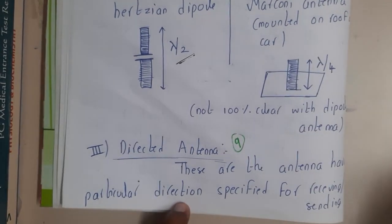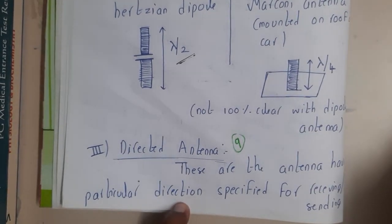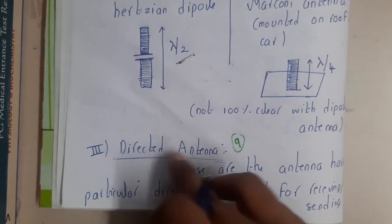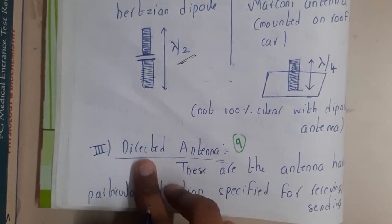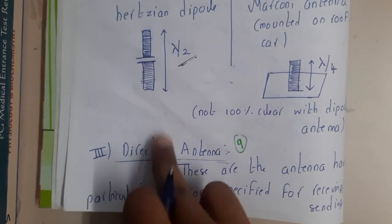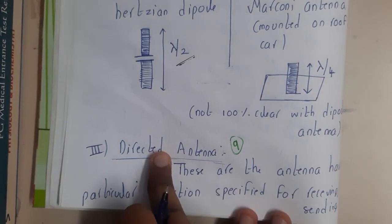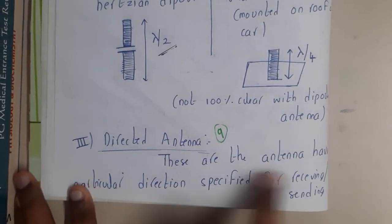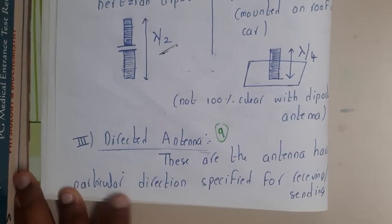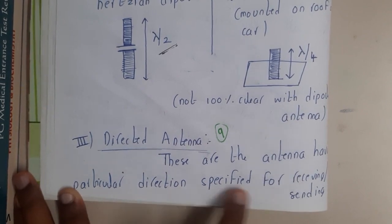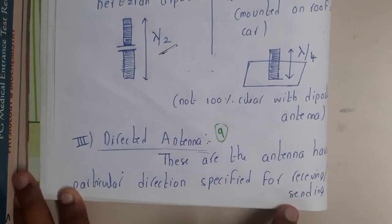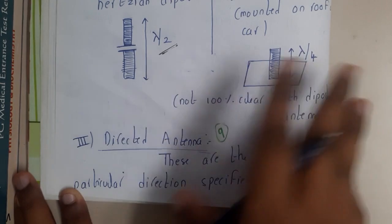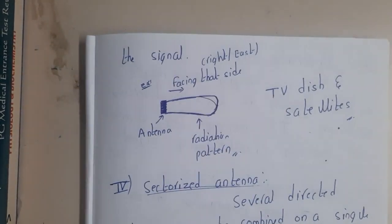Hello guys, we are back with our next lecture. In this lecture, let us go through the directed antenna. From the name only you can say there is some particular direction in which the signals will go. These are the antennas having a particular direction specified for receiving or sending data — both for sending as well as receiving.